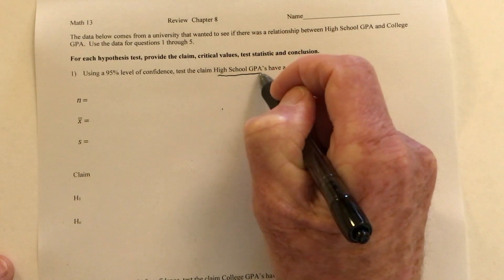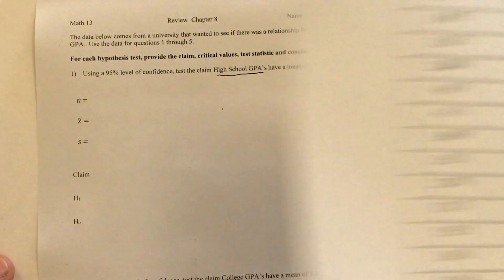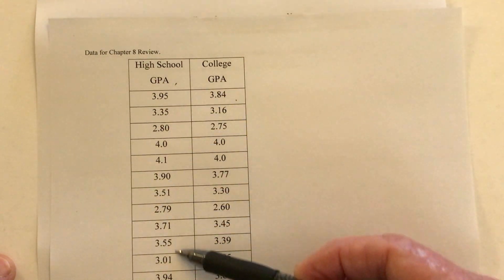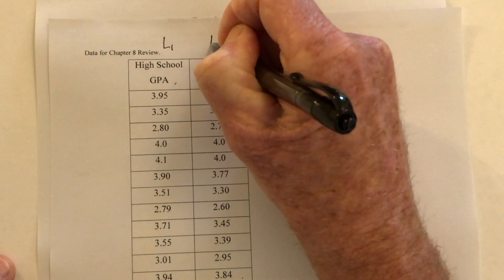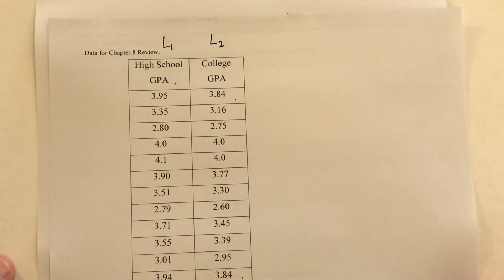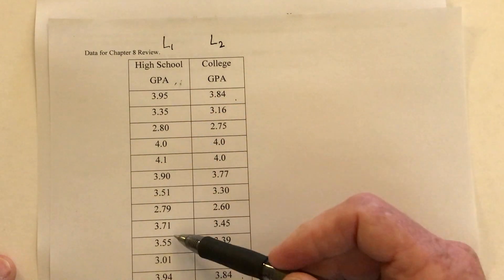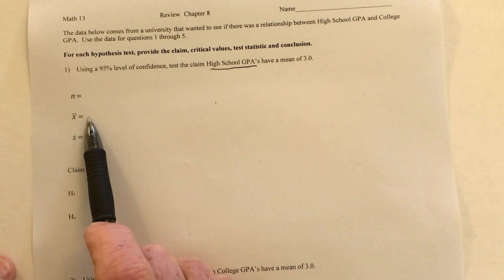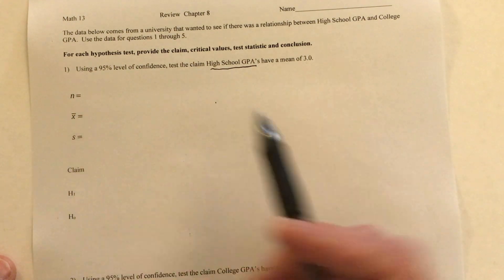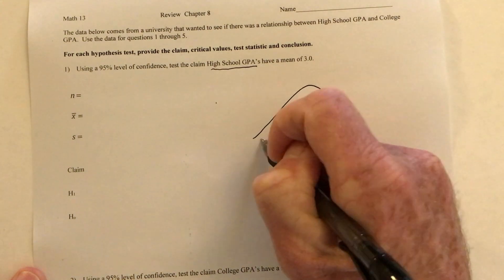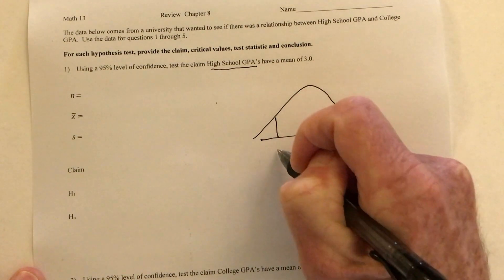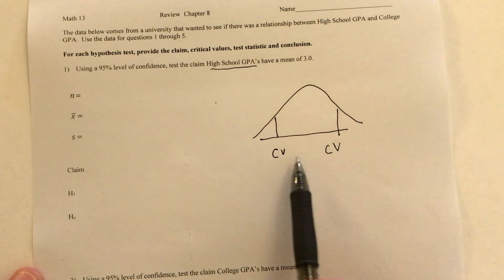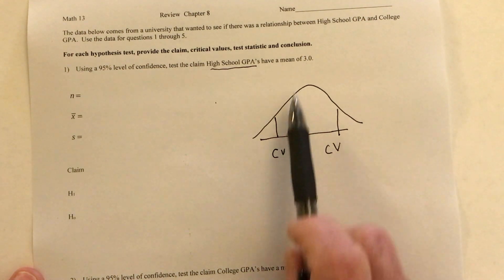This question is about their high school GPA. If you look at the last page of this review, here are their high school GPAs. Type all of these and make sure you put the whole list in list one, and then their college GPAs in list two. Once you have these in list one, you can start answering this question — how many people, what's their average high school GPA, and what's the standard deviation. Then you draw the normal distribution and find the critical values. The details are on that other video about testing claims about the mean.